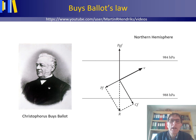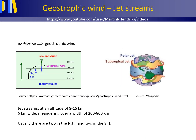This short video lecture introduces Buys-Ballot's law and the circular movement of air around low and high pressure areas. At an altitude of around 8 to 15 km above the Earth's surface, the air movement experiences little to no friction. This results in an equilibrium where the pressure gradient force and Coriolis effect balance each other out, leading to a geostrophic wind parallel to the isobars.